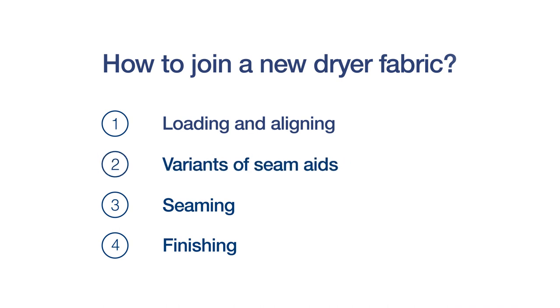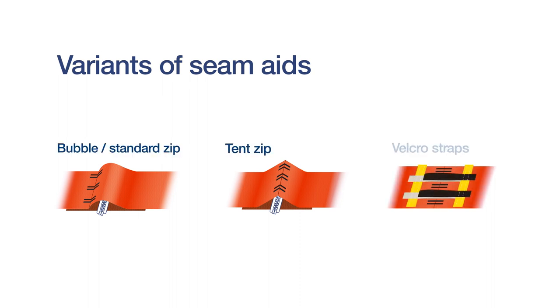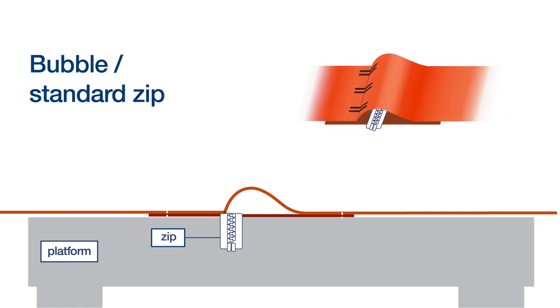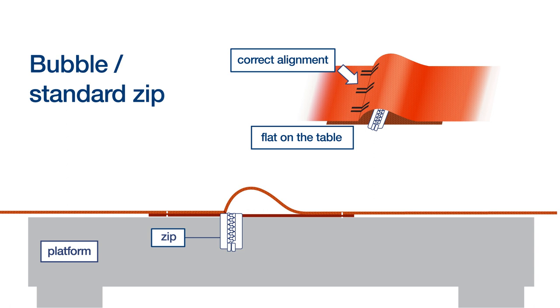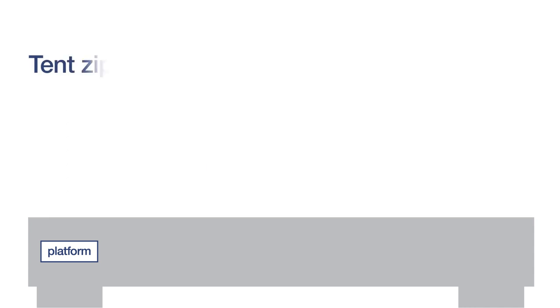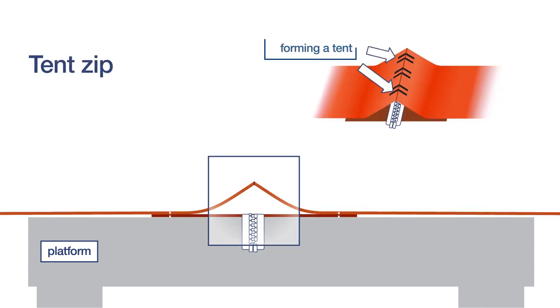There are different seam aid designs. Standard zip: align the fabric ends with the short side flat on the table and the longer side forming a bubble. Tent zip: both fabric ends are the same length and come together forming the shape of a tent.